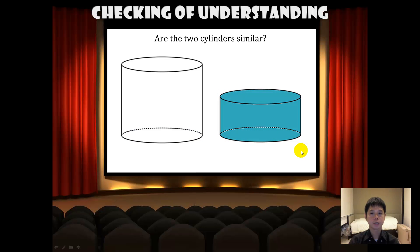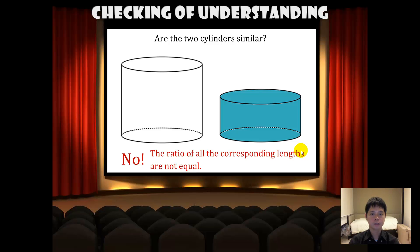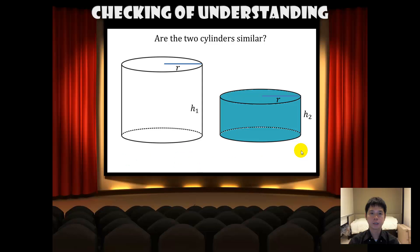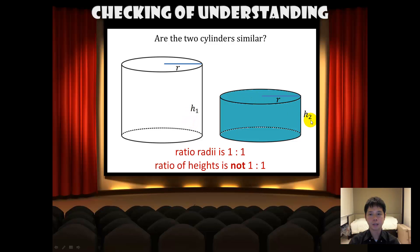Are these two cylinders similar? They do look similar, but the answer is no. The reason is that the ratio of all the corresponding lengths are not equal. For instance, the ratio of the radii is 1 to 1; however, the ratio of the heights is definitely not 1 to 1, as H2 is smaller than H1.